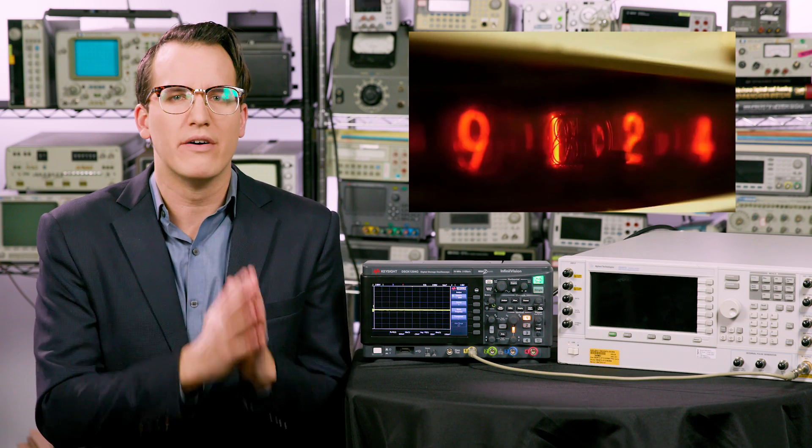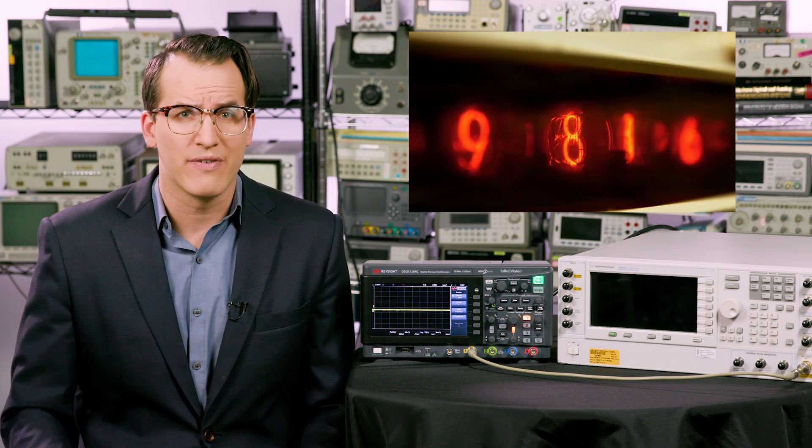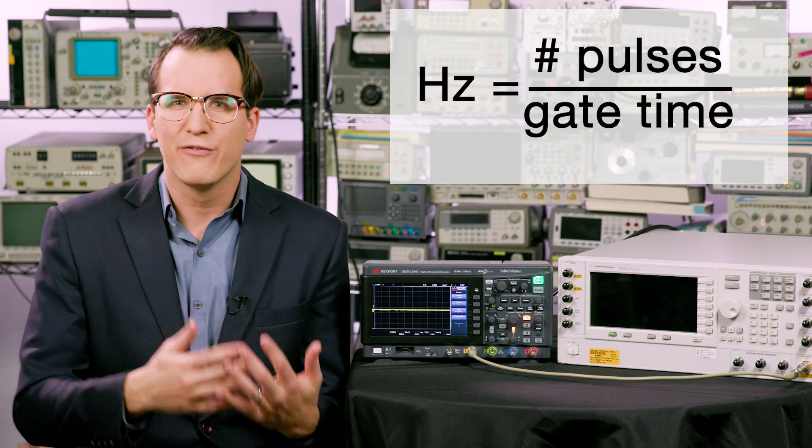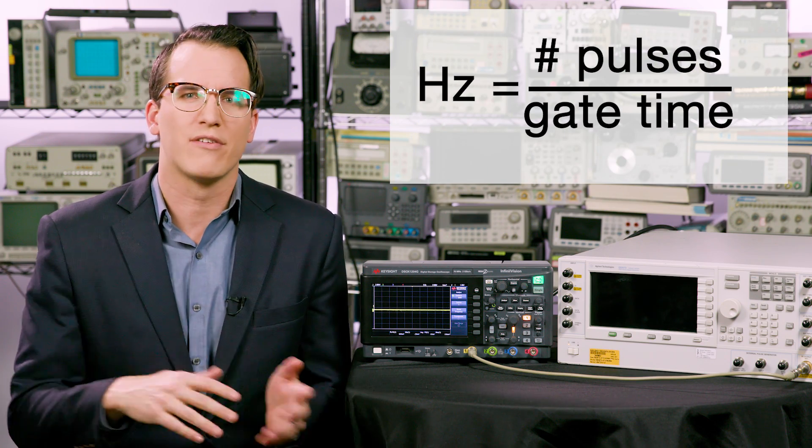Those trigger comparators are pretty convenient because that's exactly what we need for our frequency counter. It's called a frequency counter because it literally counts. It counts the number of edges it sees in a specified amount of time called the gate time. The frequency is then the number of pulses divided by the gate time. A basic frequency counter is essentially just a comparator which identifies signal edges and a microcontroller to count the output and display the results.